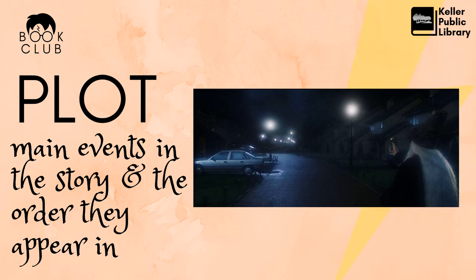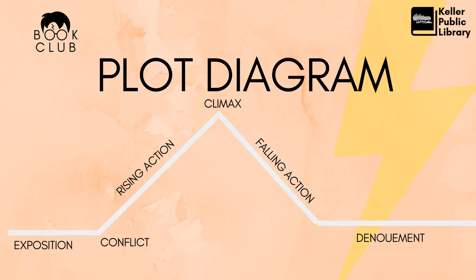Before we know all about plots, we have to talk about the individual parts of plot. One technique you can use to study the plot of a story is to make a plot diagram — kind of like a map of the story. The drawing is shaped like a mountain. At the top of the mountain the story is the most exciting, and things get less exciting as you move down. We'll come back to the diagram once we've covered all the individual terms.